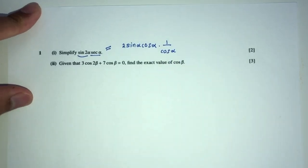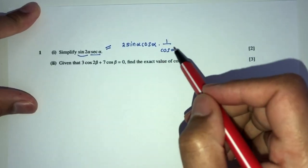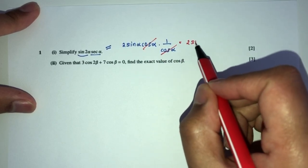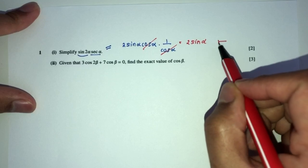Therefore, you can see, we can simplify this pretty easily. This will cancel out, so you have simply 2 sin α as your answer for part 1.